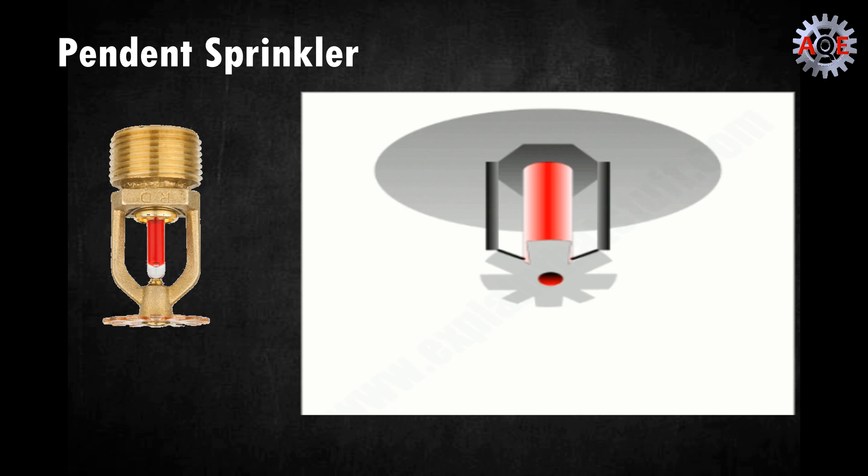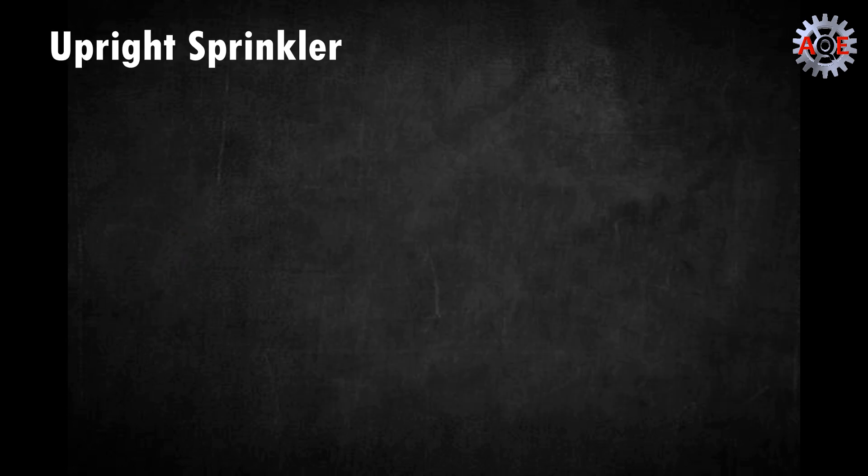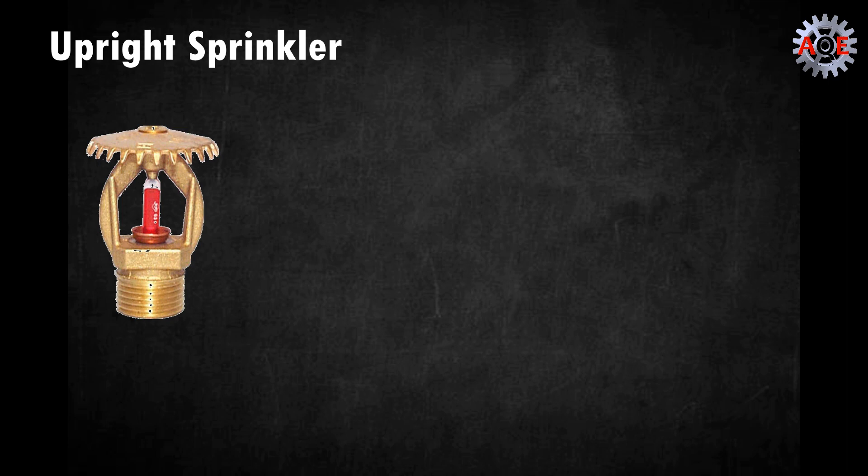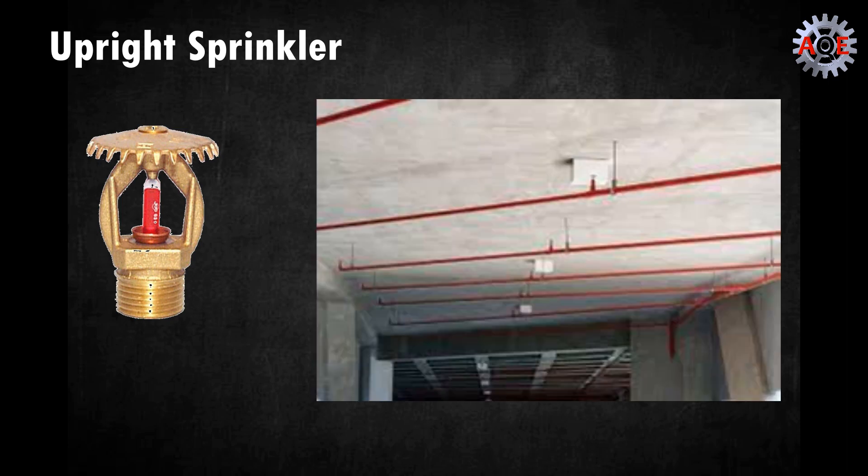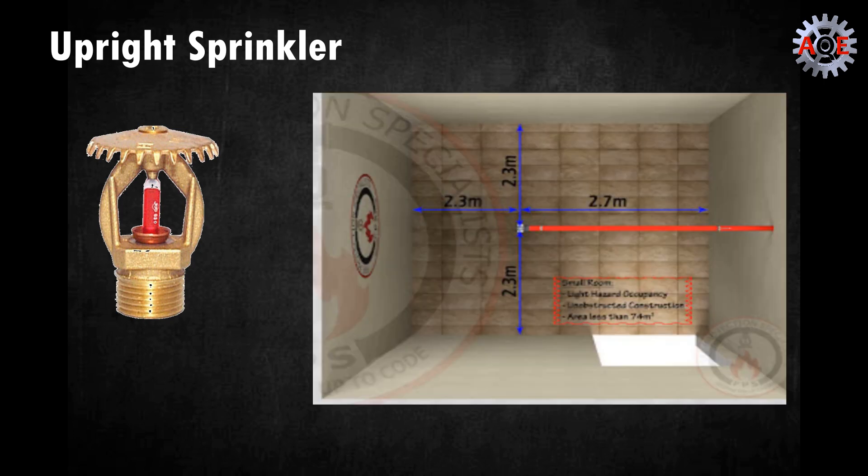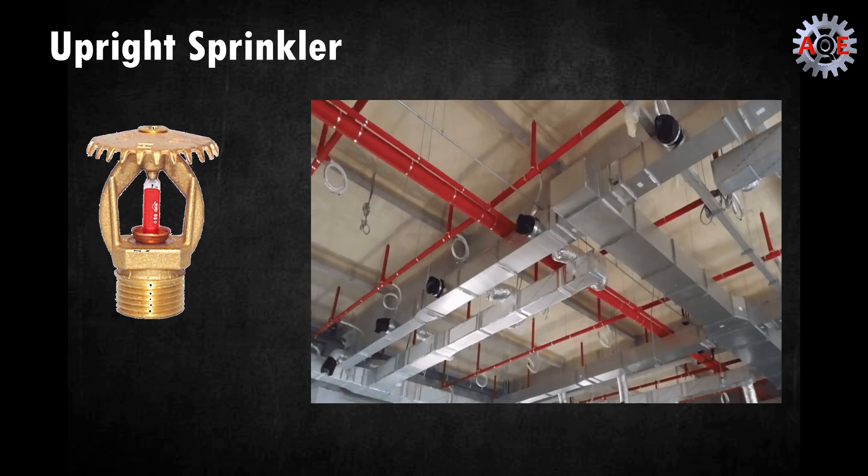An upright fire sprinkler points upwards towards the ceiling. The deflectors are also curved down so that the water sprays in a hemispherical position. They're generally used in mechanical rooms or rooms that are difficult to access. They also offer great coverage for obstructions such as air ducts.